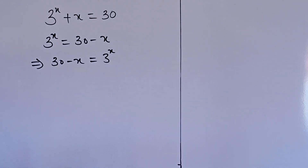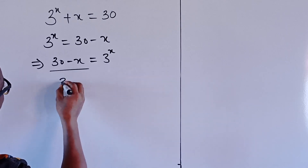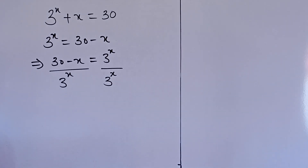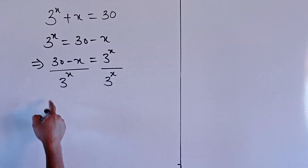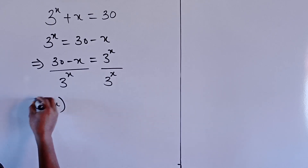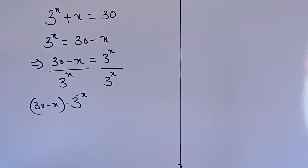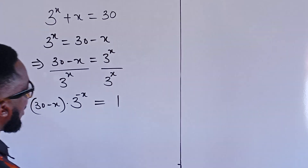The next thing I shall do is divide both sides by 3 to the x. On the right-hand side, 3 to the x divides out, leaving 1. On the left side, we are going to have 30 minus x multiplied by 3 to the negative x, because the inverse of a positive exponent gives a negative exponent from the inverse law of exponents.